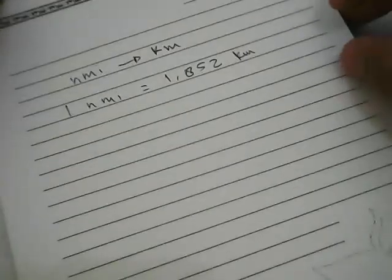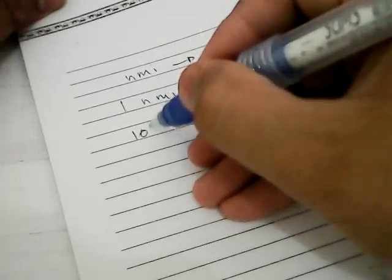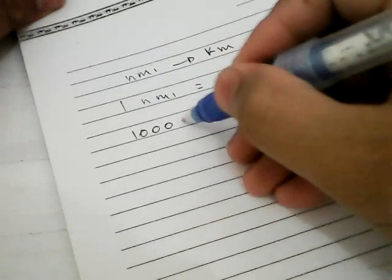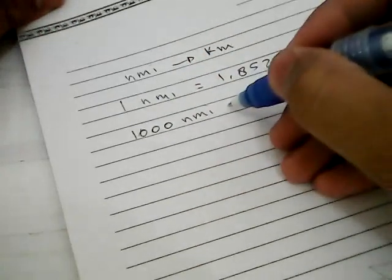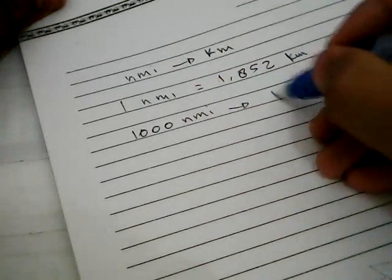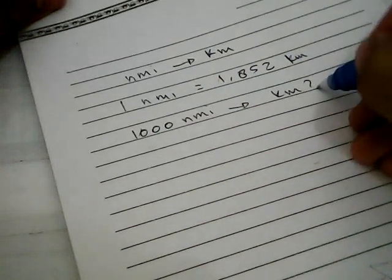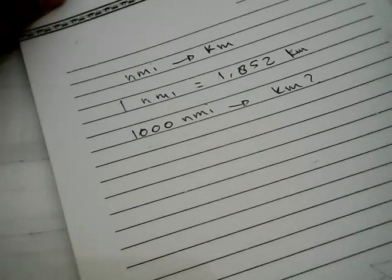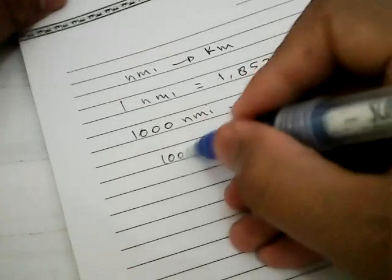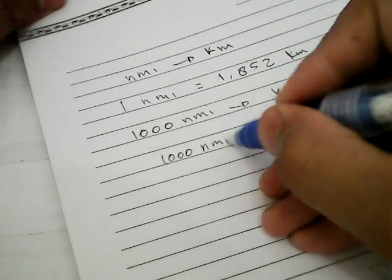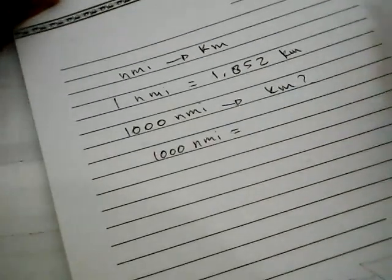For example, I want to know how much is 1,000 nautical miles converted into kilometers. To solve this problem, we need to write this 1,000 again and give it an equation mark.